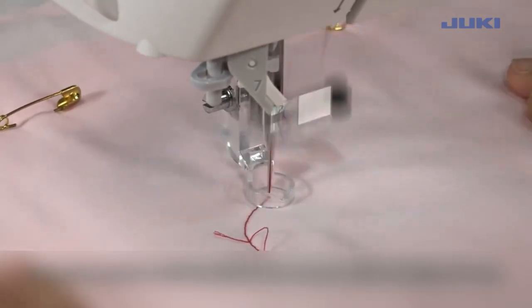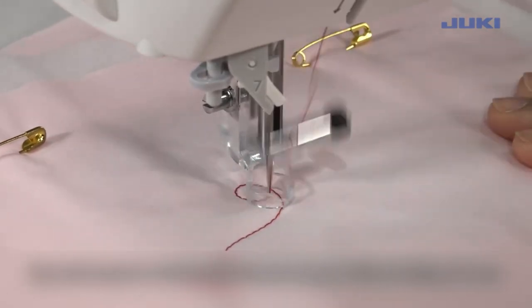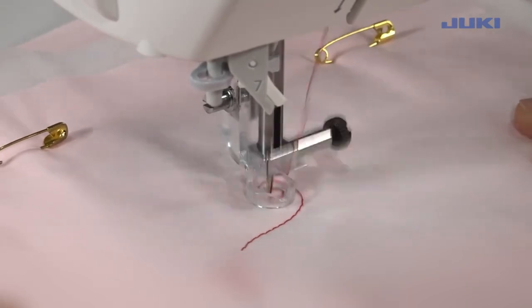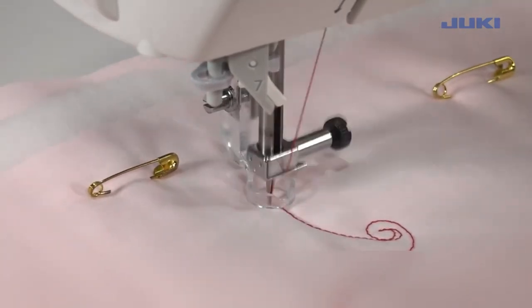On the quilting side, the NX7 has a floating mode, presser foot knee lifter, large extension table, and an individually adjustable bobbin thread monitor.